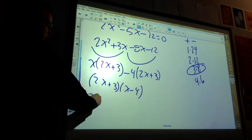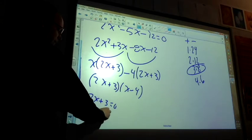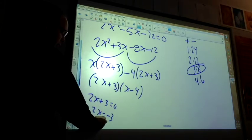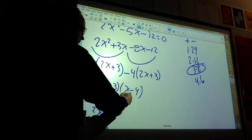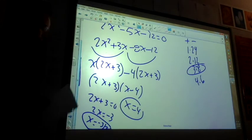So that gives me 2x plus 3 equals 0. Subtract 3. Divide by 2. So negative 3 over 2 is one answer. And then the other answer is x equals 4. Cool?